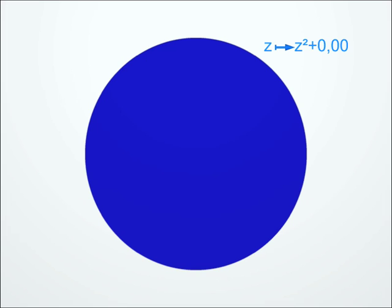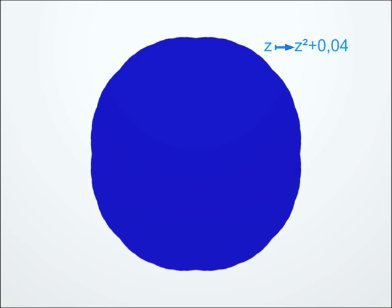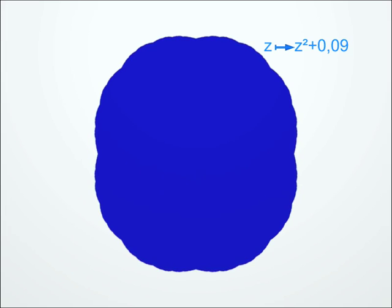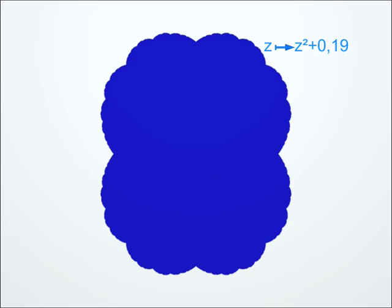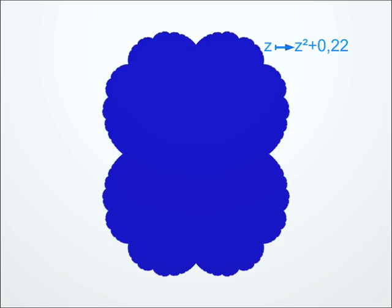But we can play the same game with other transformations, like, for instance, those of the form z-squared plus c, where c is a complex number that we will choose at will. For each complex number c, we get a Julia set whose shape changes when c changes.